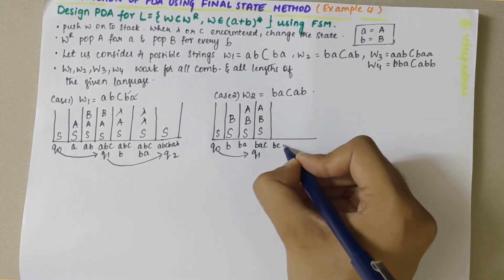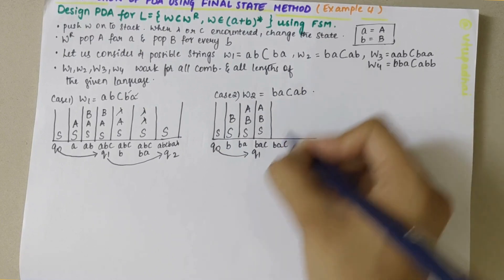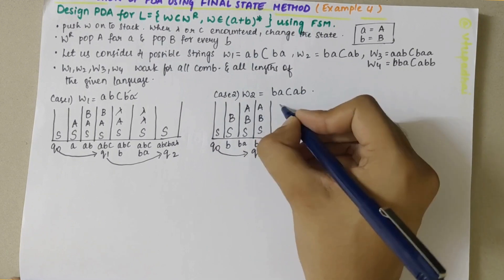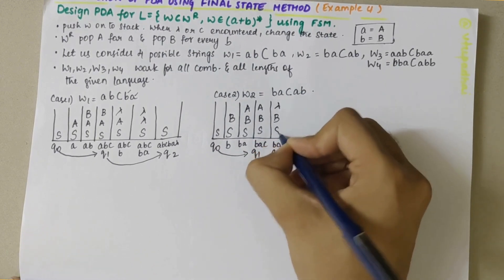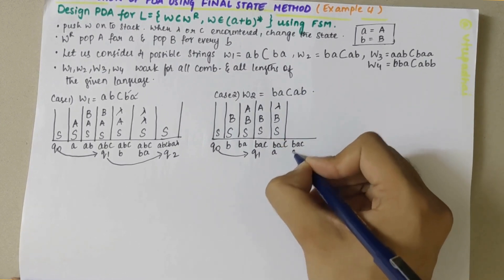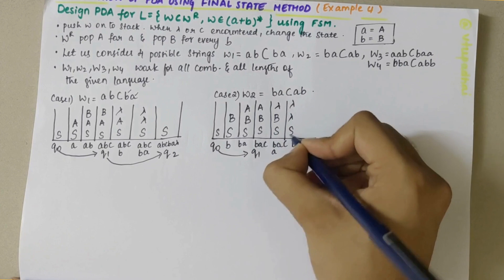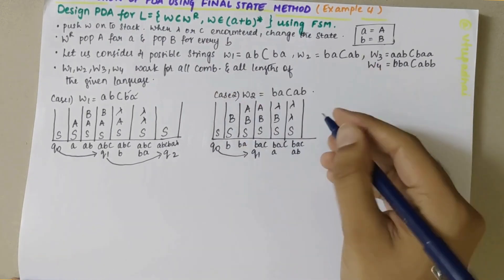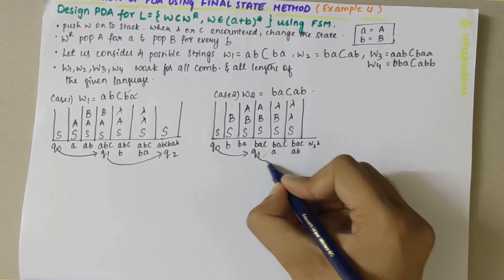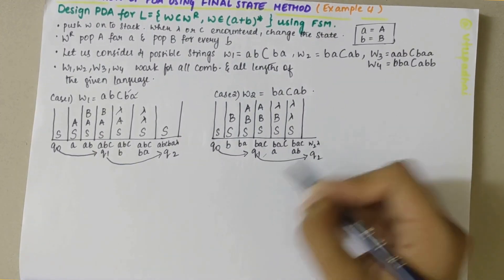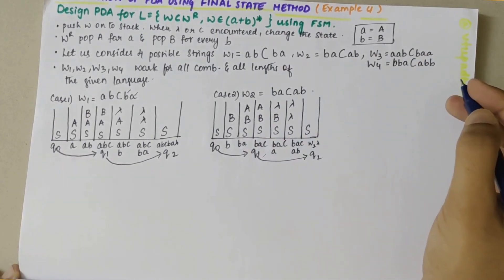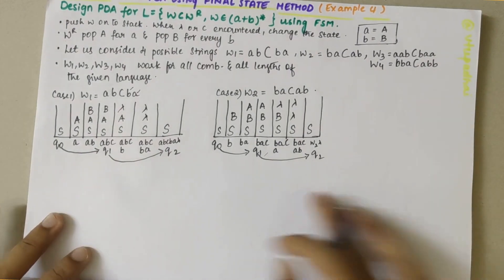Next, in the W^R part, when A is encountered we replace capital A by lambda. Then when B is encountered, we replace capital B by lambda. Once the string B A C A B is finished, we have lambda at the end. The state changes, and S remains on the stack. This completes case 1 and case 2.